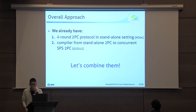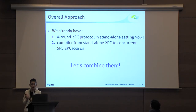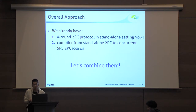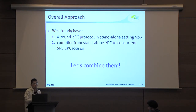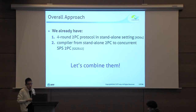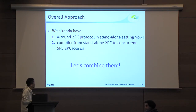Now let me explain our overall approach. From previous work, we know that we already have a four-round two-party protocol in the standard standalone single-output setting. We also know that there exists a compiler from a standalone two-party computation to a concurrent SPS-secure two-party computation. So our overall approach is quite straightforward: we combine these two results and try to apply the compiler for concurrent SPS 2PC to the four-round standard two-party protocol.